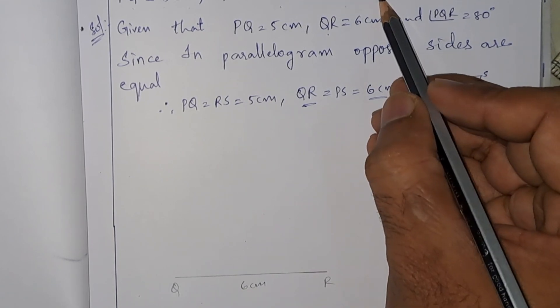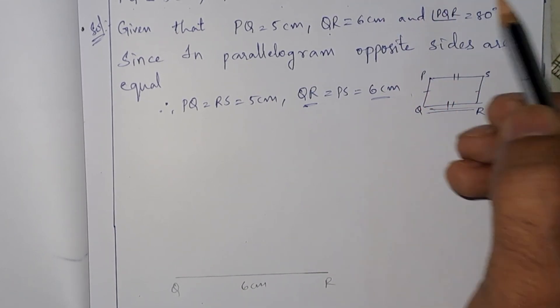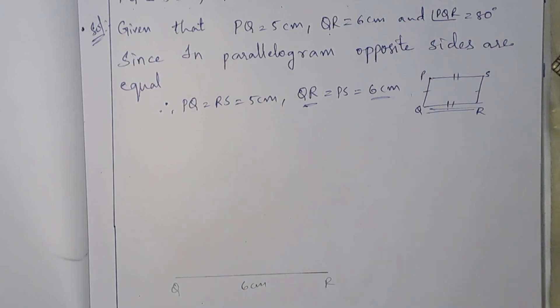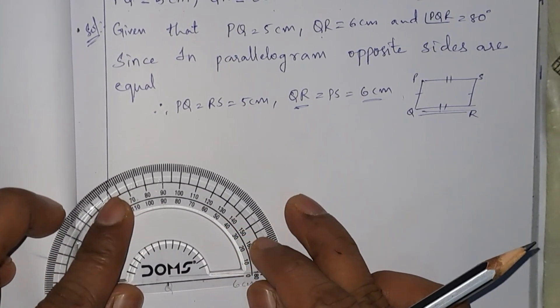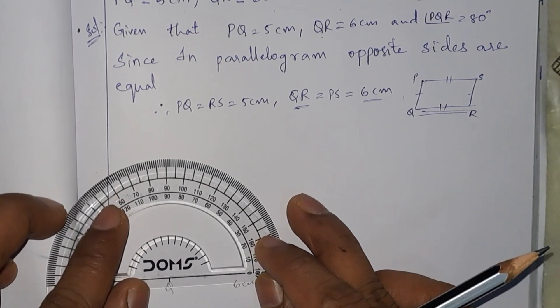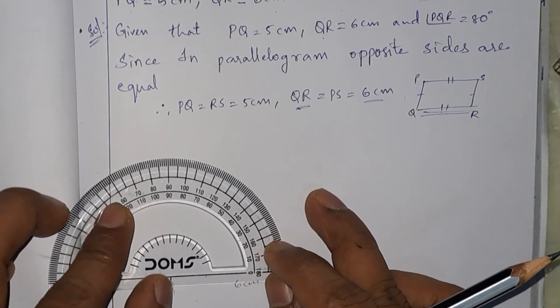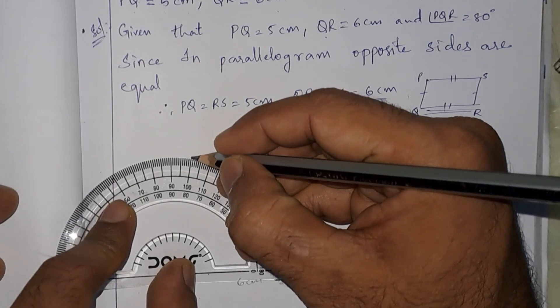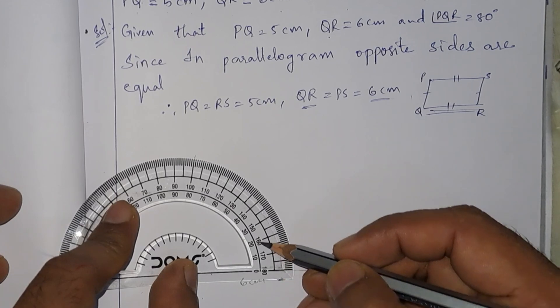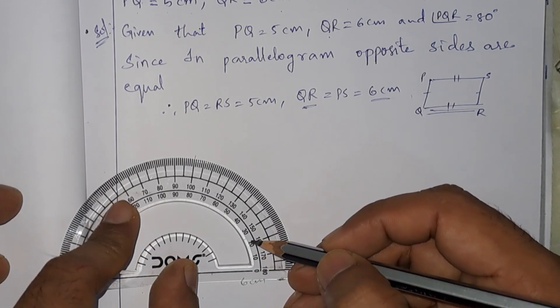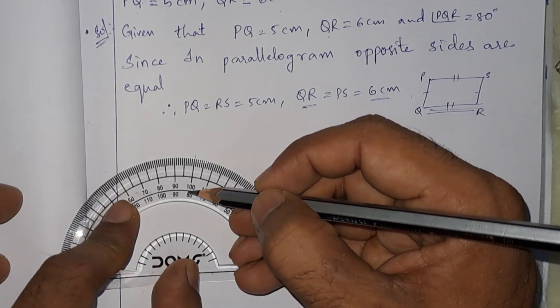From Q, we need to draw 80 degrees. So let us draw an angle of 80 degrees. Here we need to check from here. This will be 0, 10, 20, 30, 80.